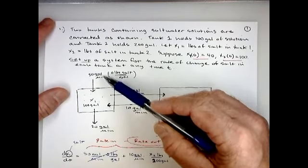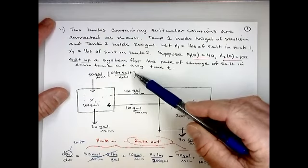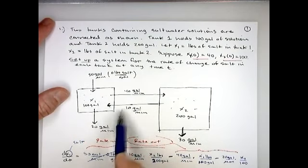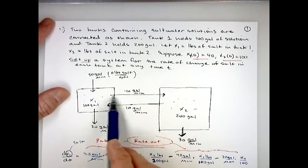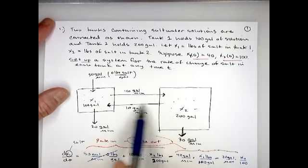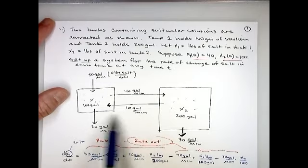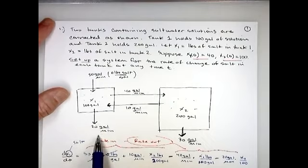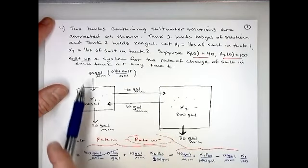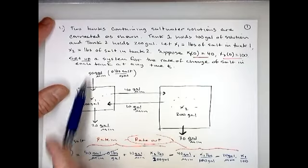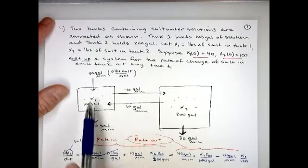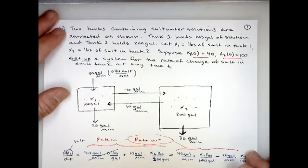We're going to flush the system out — we put in 50 gallons per minute into tank one with pure water, so zero pounds of salt. Solution flows from tank one to tank two at 40 gallons per minute, back from tank two to tank one at 10 gallons per minute, leaves tank one at 20 gallons per minute, and leaves tank two at 30 gallons per minute. The total entering matches the total leaving, so we always have the same amount of solution in the system.